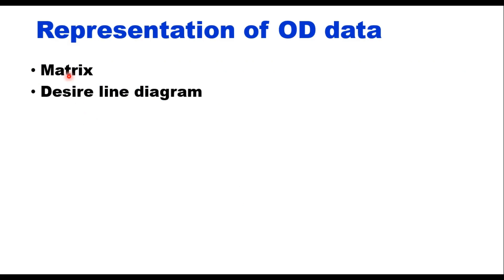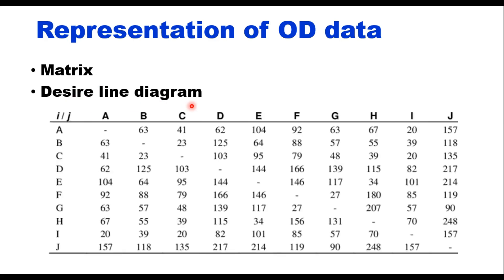OD data can be represented in two ways: in the form of a matrix or in the form of a desired line diagram. In the matrix, zones A to J are established before data collection begins. Each cell indicates the number of trips originating from zone i and terminating at zone j. For example, trips from B to C represent 23 trips. This is one way of representing OD data.